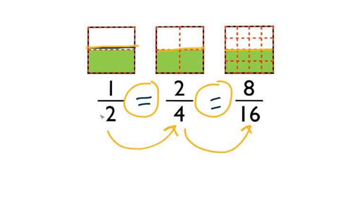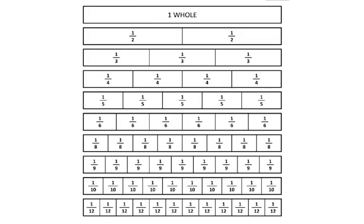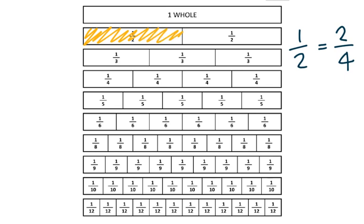Let's look at it using fraction bars, which is what we worked on yesterday. On your screen, I put some fraction bars. These should look familiar from yesterday. We just said that one half was equal to two fourths. We can use a fraction bar to see this in a different way. One half of a whole — remember, my whole goes from left to right — so one half is equal to two fourths of a whole. I want you to see if you can find any more fractions that are equivalent to one half and two fourths. Pause your video and look at your fraction bars to decide which other fractions are equivalent. Press play when you're ready to check your work.